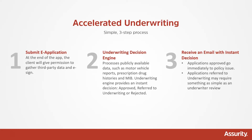That instant decision will manifest itself in the system as one of the following statuses: approved, referred to underwriting, or rejected. Moving on to step three, if the client receives an approval, their policy will be moved to the issue state at Assurity. We'll move it over to the issue team to set up premium payment and develop policy pages to send to you to deliver to the client. If the client receives a referred to underwriting status, that means the case needs to get across an underwriter's desk — but that doesn't necessarily mean a long or drawn-out process. It may just be that the underwriter needs some clarification on a prescription drug name or a piece of medical history. Oftentimes underwriters can then make an approval pretty quickly right after that.